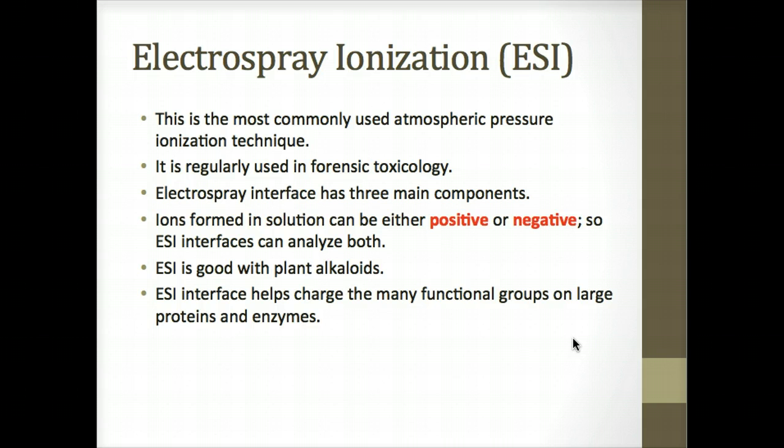The one that we want to talk about on this list that we haven't looked at before is electrospray ionization, ESI. It's the most commonly used atmosphere pressure ionization technique in mass spec and is used regularly in forensic toxicology. Electrospray interface has three main components: the nebulizer, the desolvation assembly, and the mesh electrode or repeller. Depending on the pKa of the compound and the pH of the mobile phase, ions formed in solution can be either positive or negative. Most electrospray ionization interfaces can analyze both positive and negative ions. It's particularly good with plants, alkaloids material from plant material because they are alkaline, which means they can be easily charged in solution and have some polar properties as well.